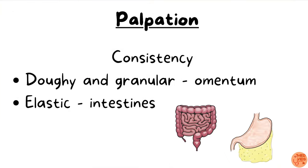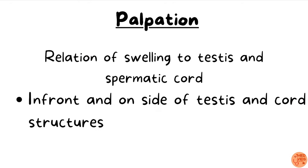The consistency of the swelling should be assessed by palpation. If the swelling is doughy and granular, it can be omentum (fatty tissue), whereas if it is elastic, it can be intestines. Also note the relation of the swelling to the testis and spermatic cord — inguinal hernia is usually present in front of and on the side of the testis and spermatic cord structures.